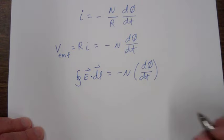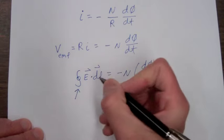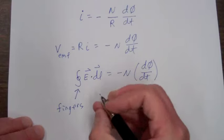And the way to apply this equation is that if you take this closed path integral and place the fingers of your right hand in the direction of the integral,